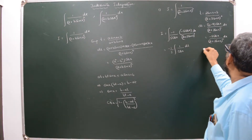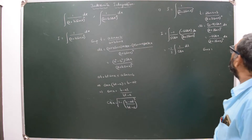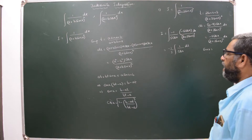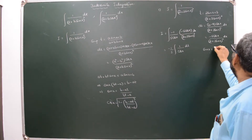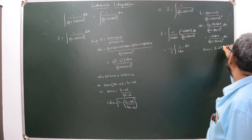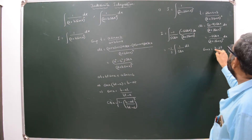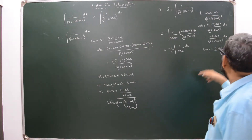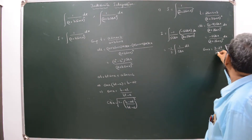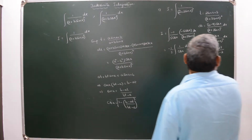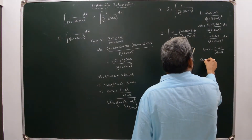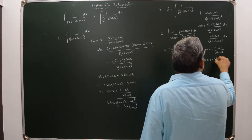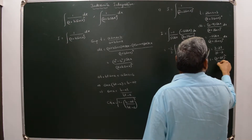Now we need to find the value of cosX. Since a = 2 and b = 3, we can directly write sinX = (b - at)/(bt - a) = (3 - 2t)/(3t - 2). From this I can find cosX: cos²X = 1 - (3 - 2t)²/(3t - 2)².